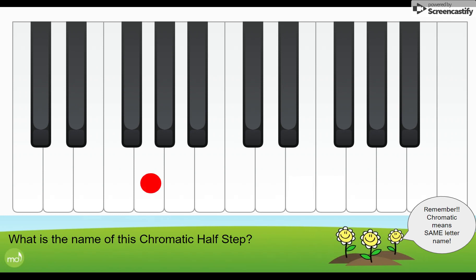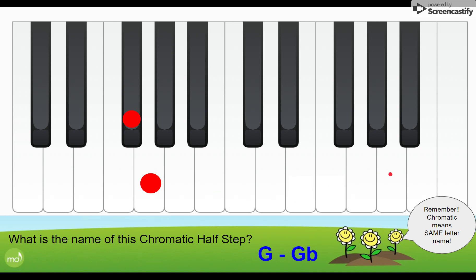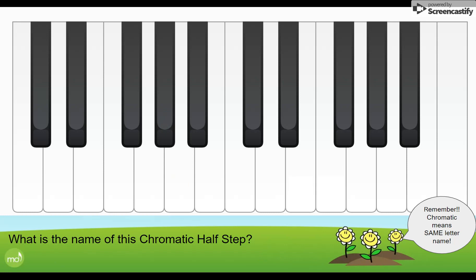Now let's try some flats — we're going to go down. We're going to start on G and go down. Remember, when we go down we use a flat, so if the first note was G, our second note will be G flat. Let's try another one going down — descending. Our first note is A; we're going to go down to the next black key. If you guessed A flat, you are correct. A to A flat is a chromatic half step.